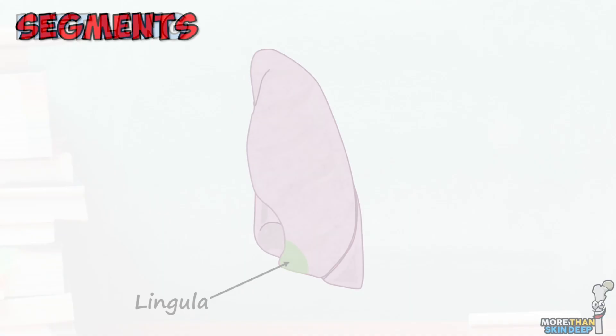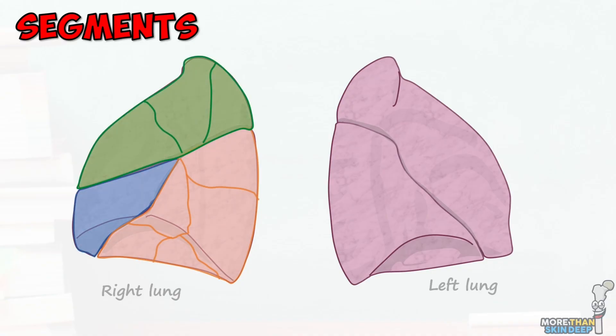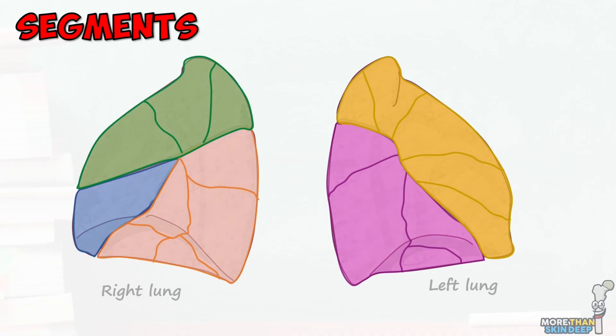You may remember from the previous video on the tracheobronchial tree that the lungs are divided into a series of segments that act as the main functional units for gas exchange. The right lung has ten segments, while the left has eight or nine. We can see most of these from the mediastinal surfaces, though their names are probably a bit too much detail for today.